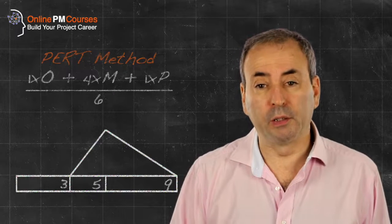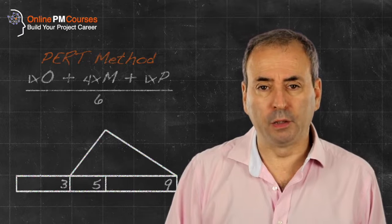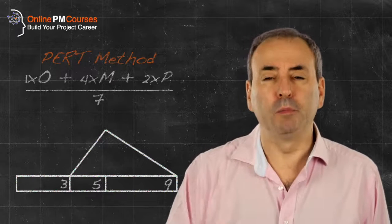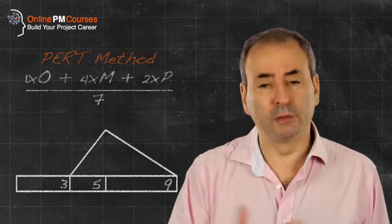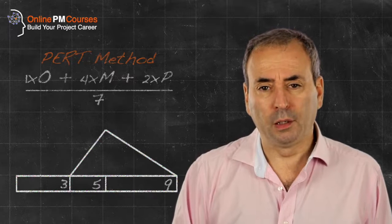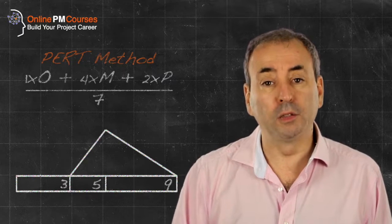That's not the only way we could do it. We could take a highly pessimistic view and multiply the optimistic by one, the most likely by four, and the pessimistic by two and divide by seven. Or we can increase the weighting on the most likely.